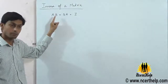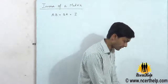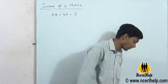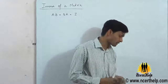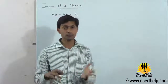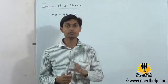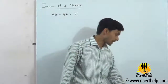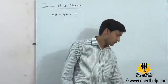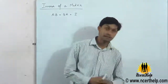If A is a square matrix of order M, and there exists another square matrix B of the same order M, such that AB equals BA equals the identity matrix I, then B is called the inverse of A, and it is denoted by A inverse, i.e., A to the power minus 1.